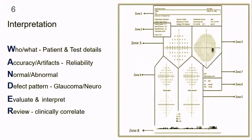This is how a regular HFA report looks. I would like to introduce an acronym: WONDER. It is not a universally accepted acronym, but it is useful while dealing with an HFA report. W stands for Who — the patient and test details. A for Accuracy or presence of artifacts. N for Normal or abnormal, and if abnormal, what is the defect. D for Evaluate all components and interpret. E and R for reviewing and correlating with other clinical characteristics. For easy and systematic interpretation, we divide the printout into eight zones.